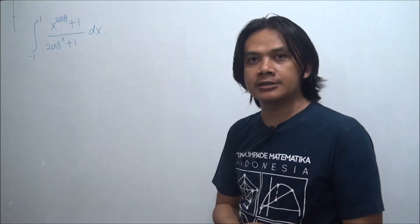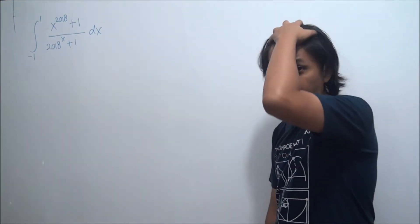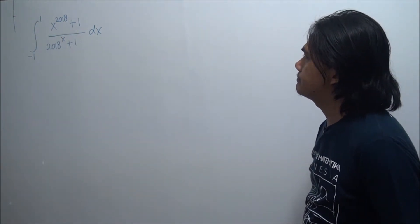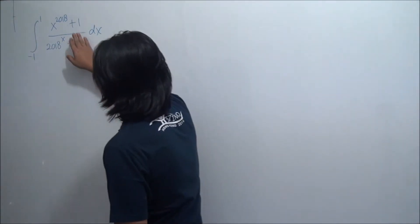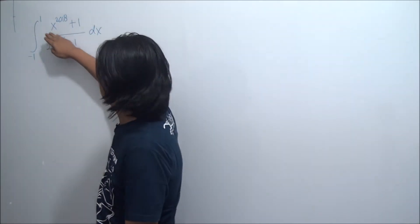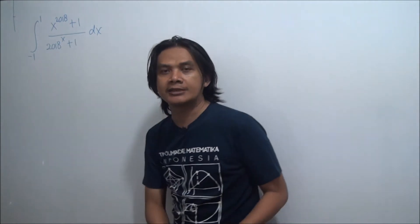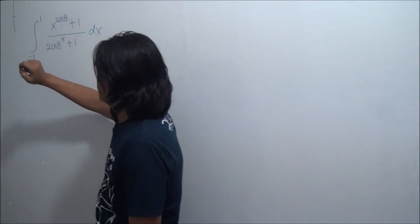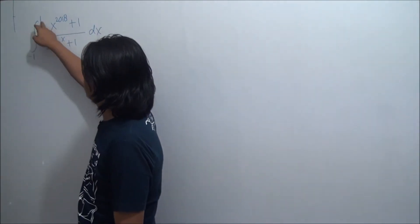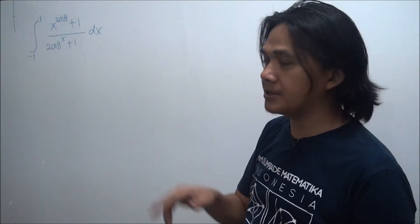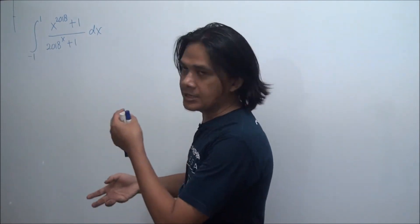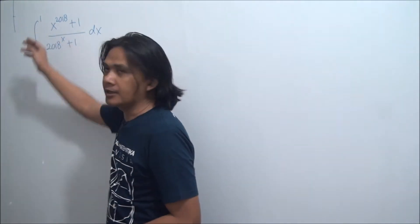Okay, let's do this integral together. First of all, if we look at this negative one and one, that's kind of suspicious. If we look at this expression itself, it's rather scary because we have x to the power of 2018 on top and 2018 to the power of x on the bottom. We're not really sure how to find an antiderivative, so we might look at the lower and upper limits for a hint. One technique is to use a substitution that interchanges the lower and upper limits.